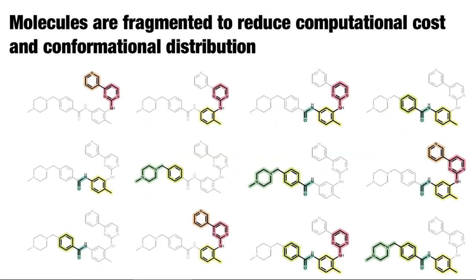Once we have the states we want torsion parameters for, we want to fragment these molecules so that the torsions we want to drive are computationally efficient. We want fragments with one, two, to three rotatable bonds to reduce computational cost and also the conformational distribution these molecules have. We do want some overlap to capture the torsional and configurational distribution of the molecule.